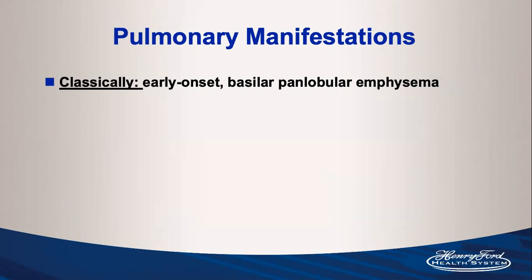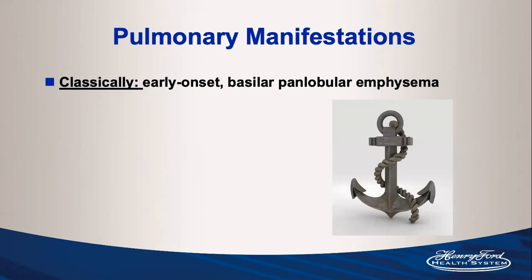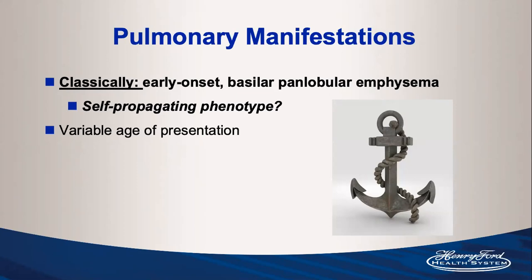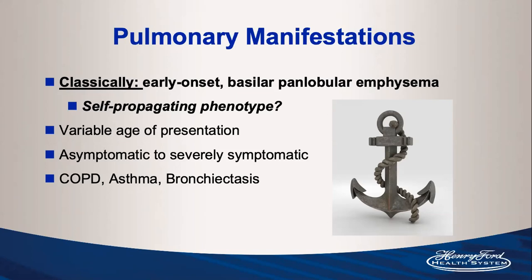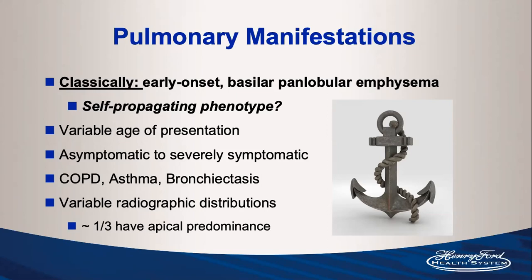While early onset basilar panlobular emphysema is the classic phenotype, it's important not to anchor on that, as this has become self-propagating — we only recognize alpha-1 in patients who present exactly this way. In reality, alpha-1 antitrypsin deficiency has a variable age of presentation, can present as COPD, asthma, or bronchiectasis, and actually about a third of patients have an apical predominance of their lung disease.